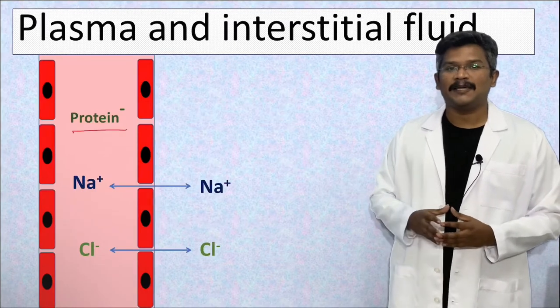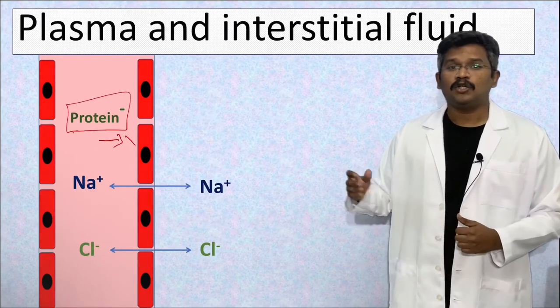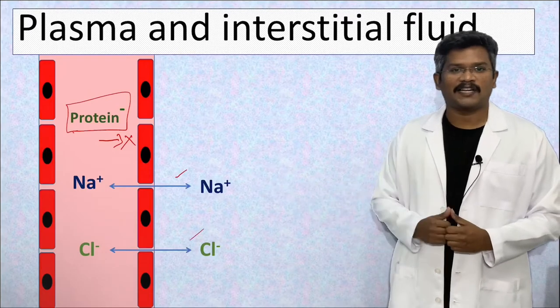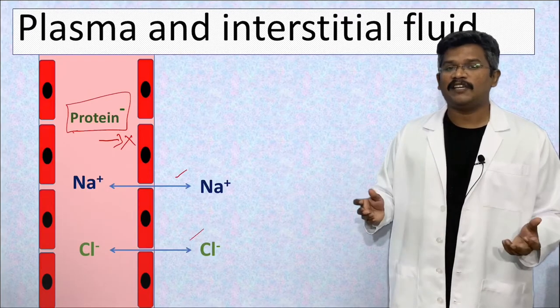The plasma protein is the impermeant solute here. Though the sodium and chloride are freely permeable across the capillary membrane, they don't have an equal distribution.